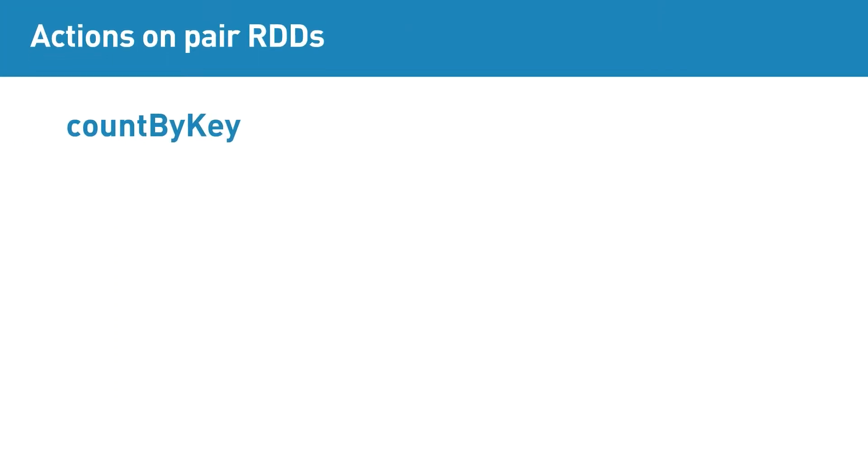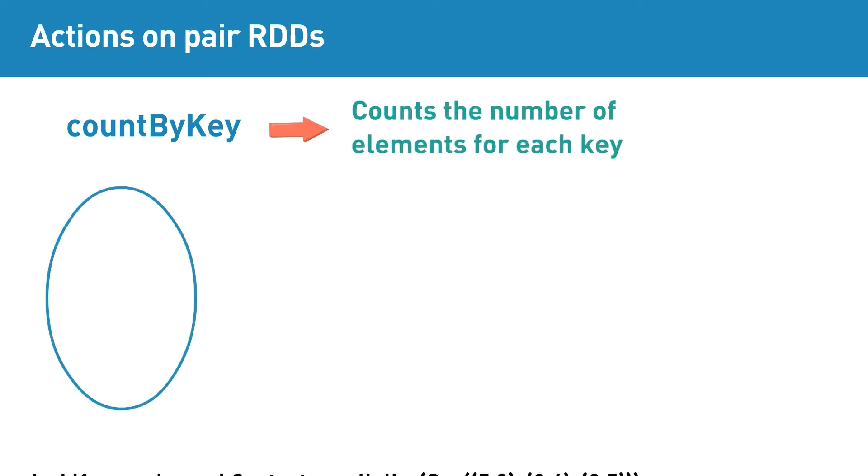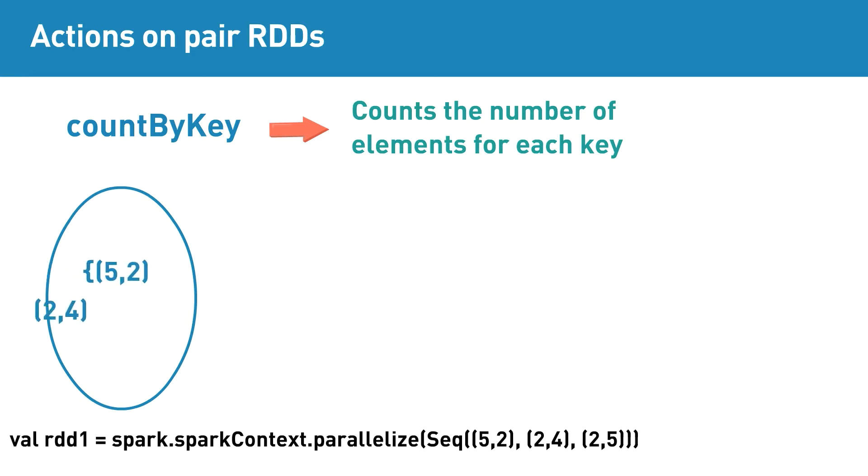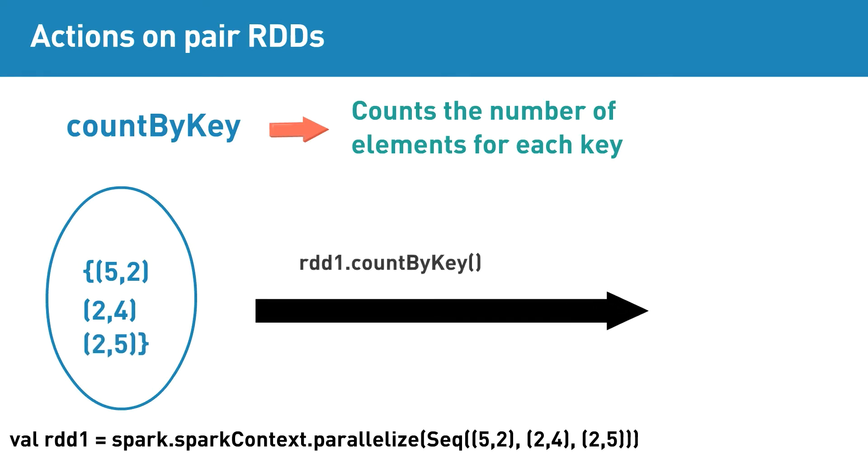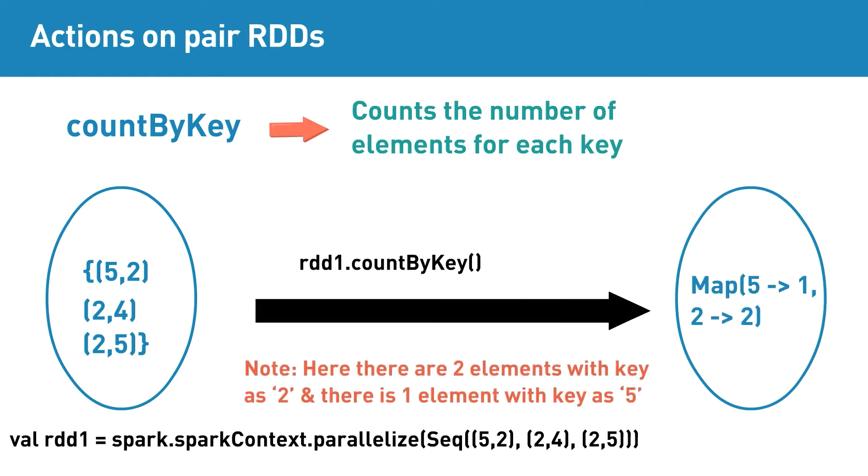Count by key is a pair RDD action that counts the number of elements for each key. Say if input RDD contains elements [5,2], [2,4], [2,5], then applying count by key transformation will return map 2 to 2, 5 to 1. Output shows that there are two elements with key as 2 and there is one element with key as 5.